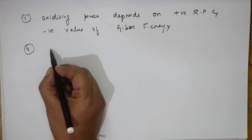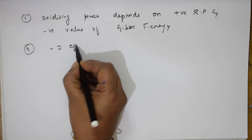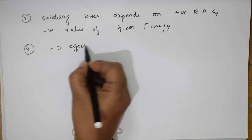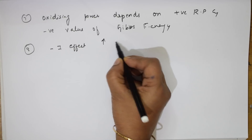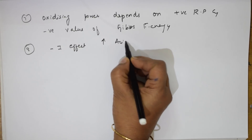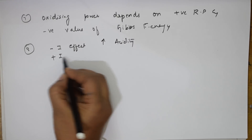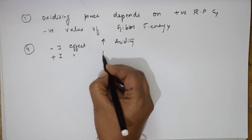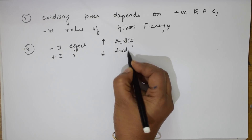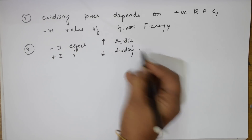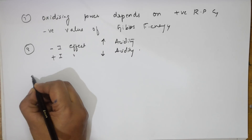In terms of general organic chemistry: minus I-effect groups (EWG) increase acidity, and plus I-effect groups decrease acidity. Remember this.